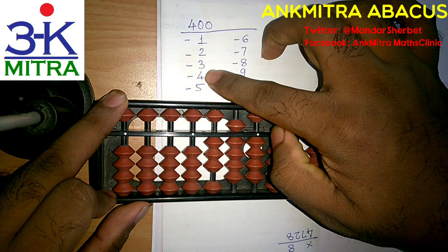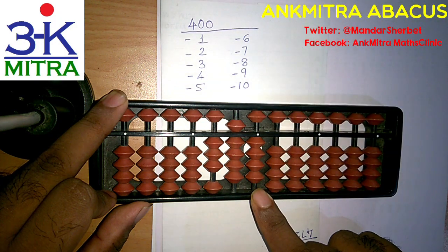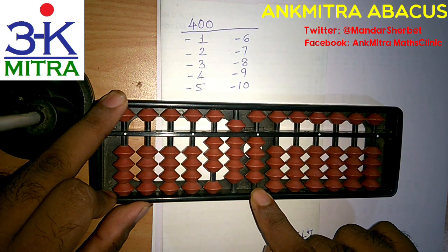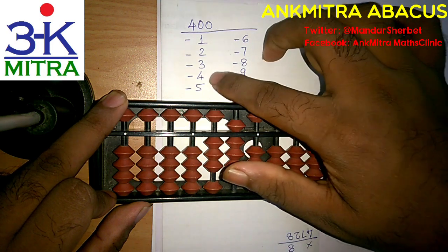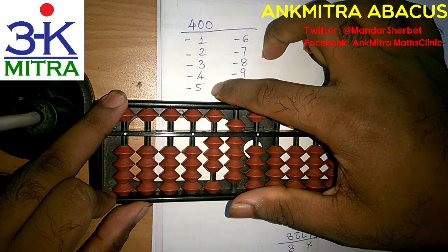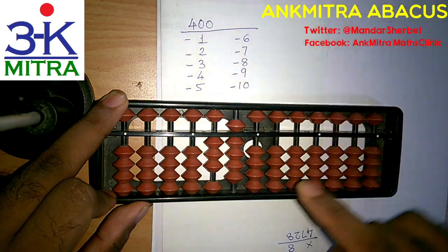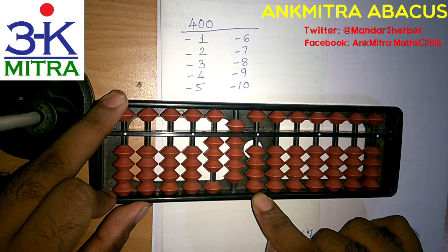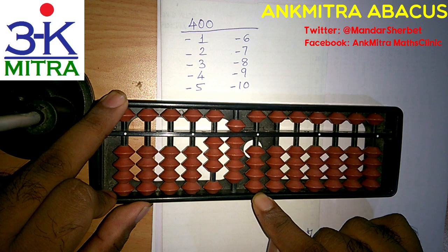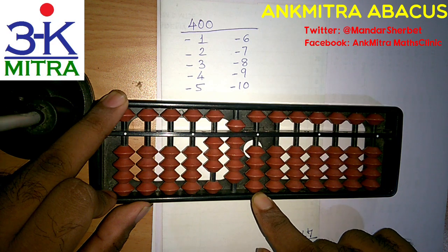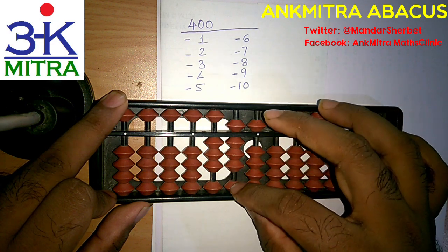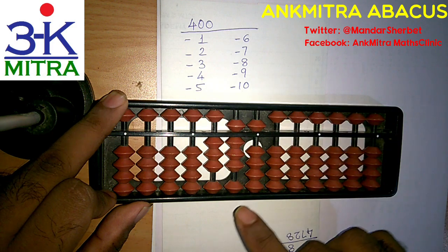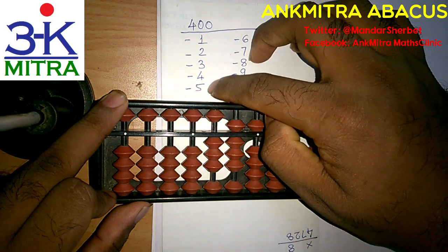Now coming to the subtraction of 4. I have 4 bits available on the units place so I can subtract 4 directly. Now coming to the subtraction of 5. On the units place now I don't have anything, so I have to use the big friend formula of minus 5 which is plus 5 minus 10. So I will do plus 5 here and minus 10 on the next left rod. So subtraction of 5 is done.